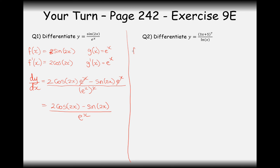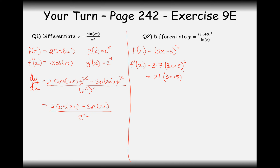The second question has a tricky chain rule part on top, so take it slowly. f(x) equals (3x + 5)^7 — this is a chain rule function where 3x + 5 is inside the function x^7. Differentiate the inside first, then the outside: it's going to be 7·(3x + 5)^6, and simplifying gives 21·(3x + 5)^6. The g function is ln(x), which is a little easier — ln(x) differentiates to 1/x.